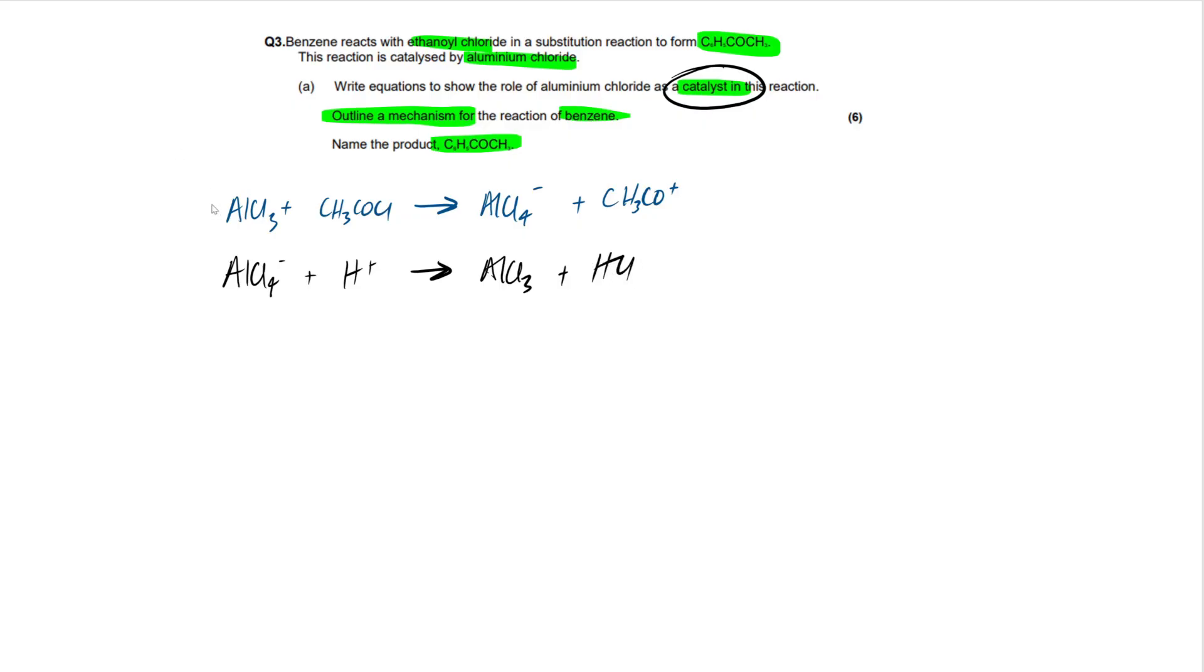Now we're going to see where this H+ comes from once we've done the mechanism, but for now just accept it. So this reacts with that to produce us our AlCl3 plus hydrochloric acid. So as I mentioned, first equation is going to be a reactant. Second equation is always, always, always going to be reformed in the reaction, or regenerated is a terminology AQA likes to see. And that's because it's a catalyst. It doesn't get used up in the reaction. It just provides an alternate pathway with a lower activation energy.